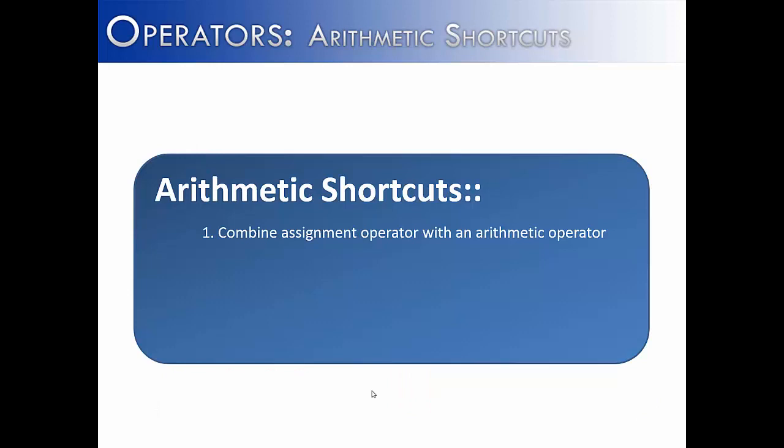Arithmetic shortcuts combine the assignment operator with an arithmetic operator, just as we've seen in the prior examples. So, num is assigned to num plus 10 is equal to num plus equals 10. It's important to note that the arithmetic operator always goes before the assignment, so it's going to be plus equals or minus equals, not equals minus. That will cause an error.